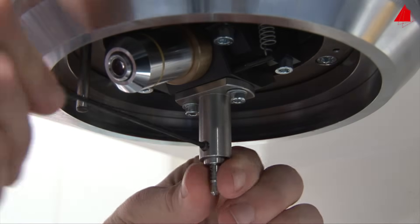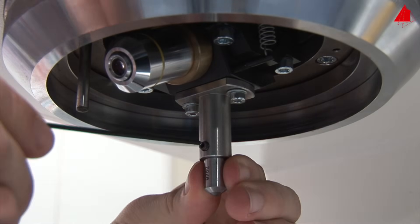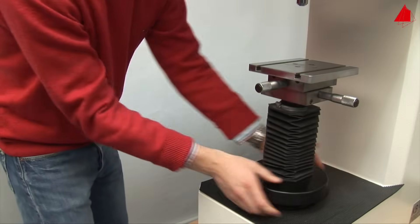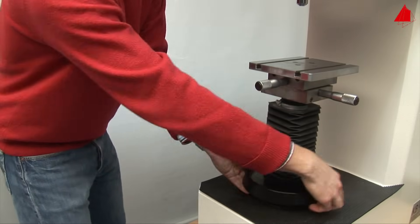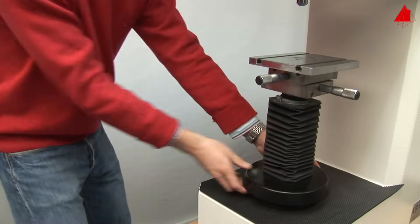It is also possible to select and exchange the indenter, so different methods of hardness testing can be conducted on the same testing machine. The support table can be adjusted in height, so the test piece can be positioned at the correct distance to the microscope lens and the indenter.